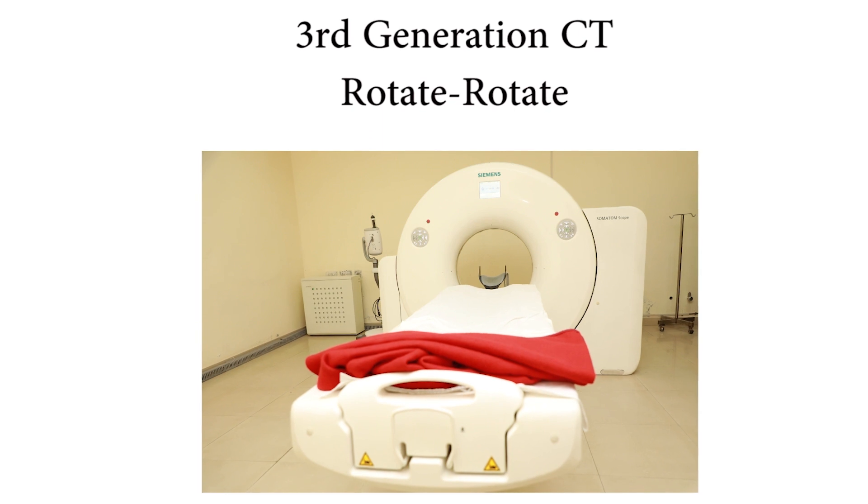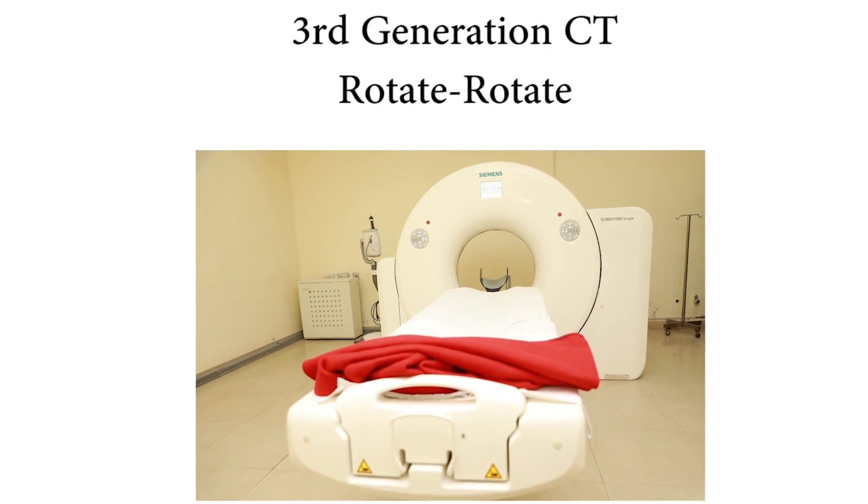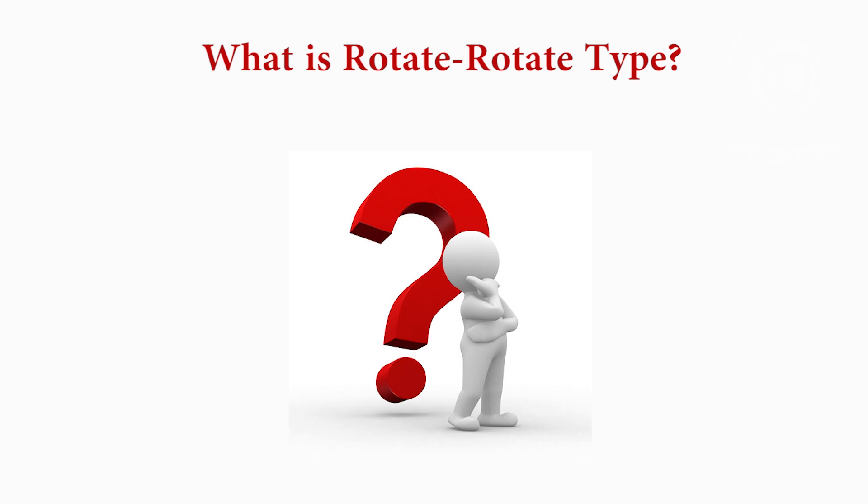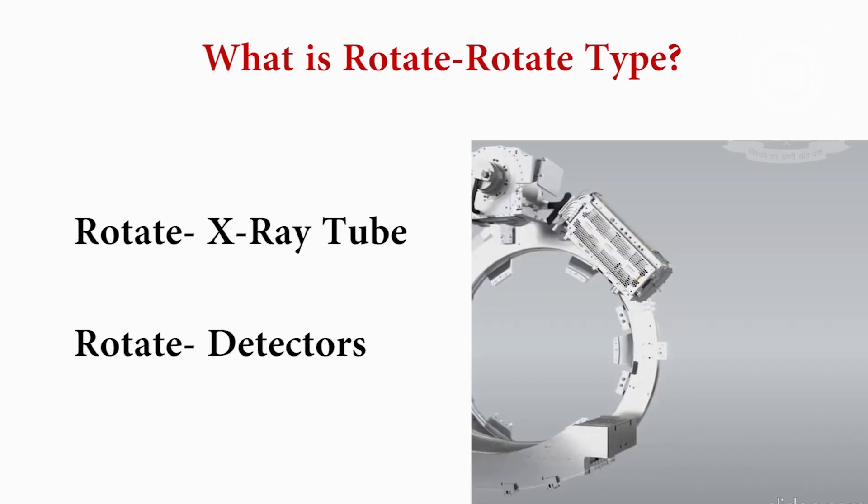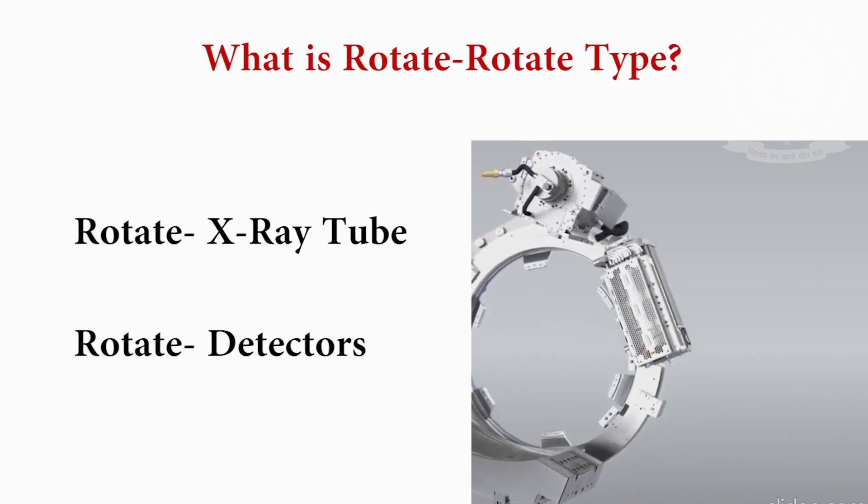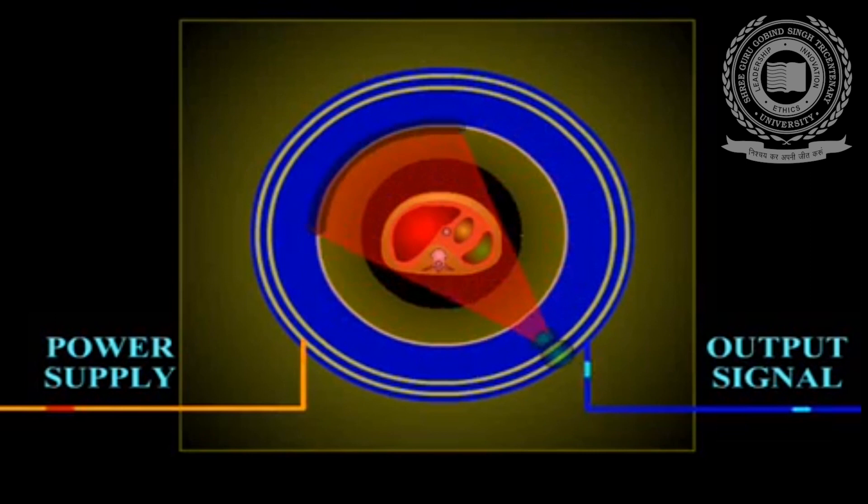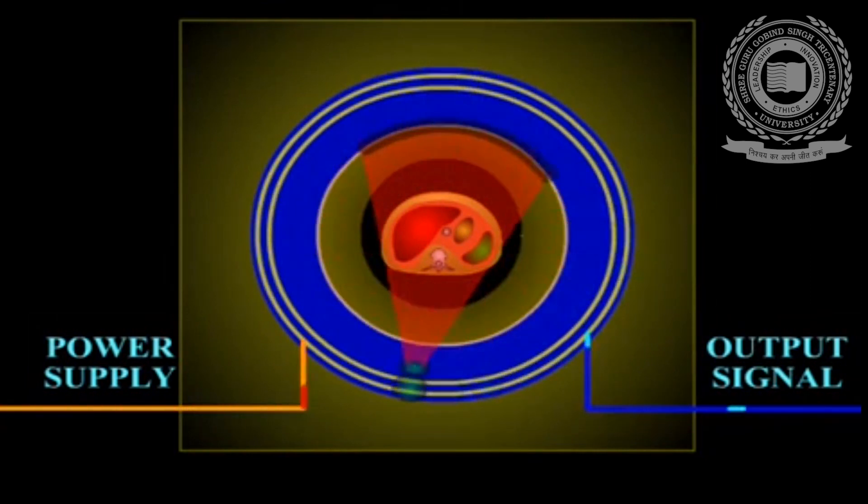And very soon third generation was introduced, third generation scanner known as rotate-rotate type. What is rotate-rotate type? Two time rotate word is used, one for X-ray tube and second for detectors. As you can see in this animation, the X-ray tube and detectors both rotate around the patient but parallel to each other.